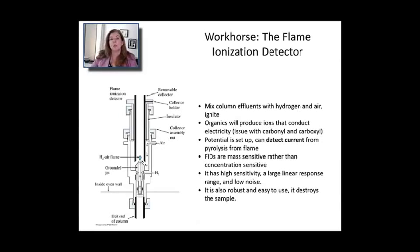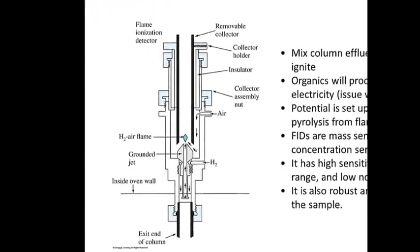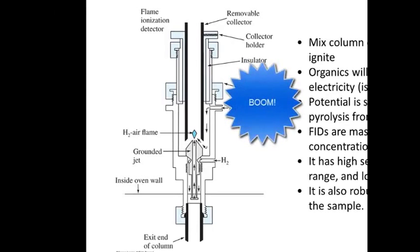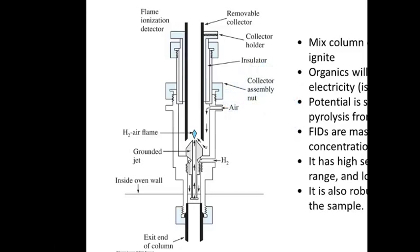I would say the workhorse of most GC systems out there today is the flame ionization detector. An FID, as it's also known, is a detector that takes what's coming off of the column and it mixes it with both hydrogen and air and then it ignites it. So it's basically a tiny little explosive device tacked onto your gas chromatography system.